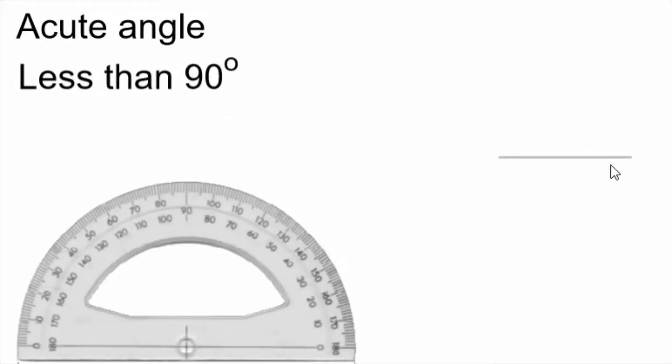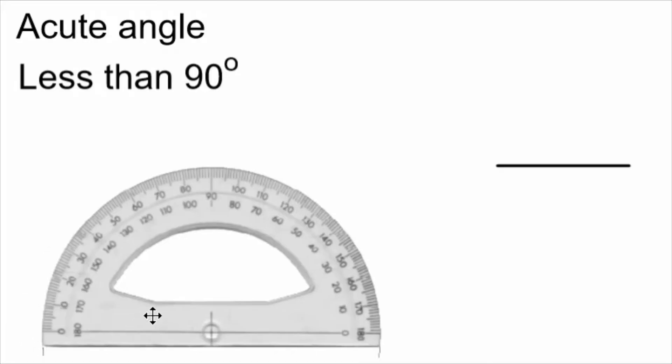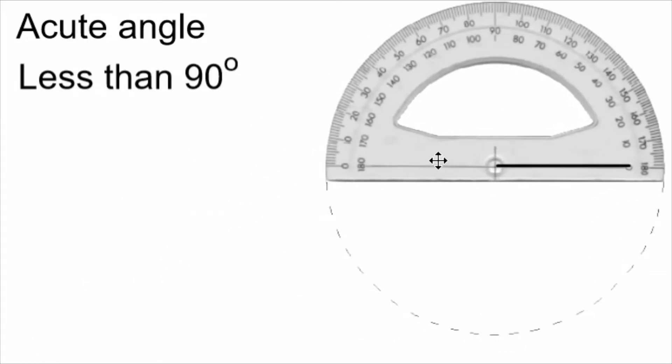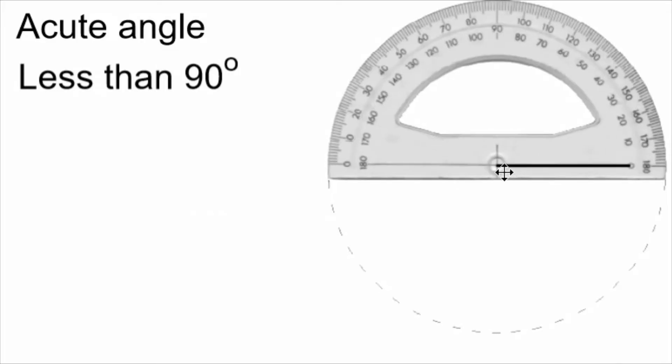We start with a baseline, any line that we can draw anywhere on our page, and we put the protractor on the baseline so that the zero dot of the protractor is on one end of the line that we drew. The zero dot is this part of the protractor, and the baseline is this line along the bottom.